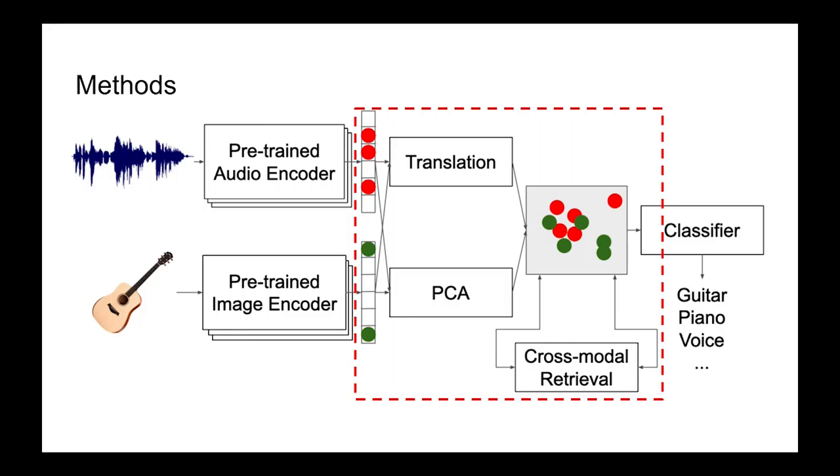We then evaluate how well the translation models do by cross-modal retrieval task, and we use this to select best-performing pre-trained embedding models, which is the combination of ResNet and YAMNet. We also apply PCA only for dimensional reduction to make sure that both image and audio embeddings are the same dimension, which is 128. This is for baseline comparison.